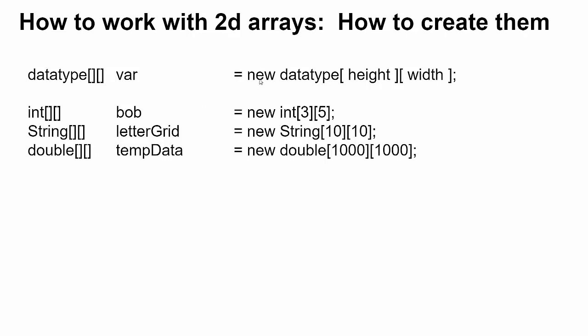Then you have an equals sign where you say new, and then you repeat the same data type, but then you tell it the size of the array you want to create inside brackets. If I want to make an array that's a height of 3 and a width of 5, I would say new int[3][5].